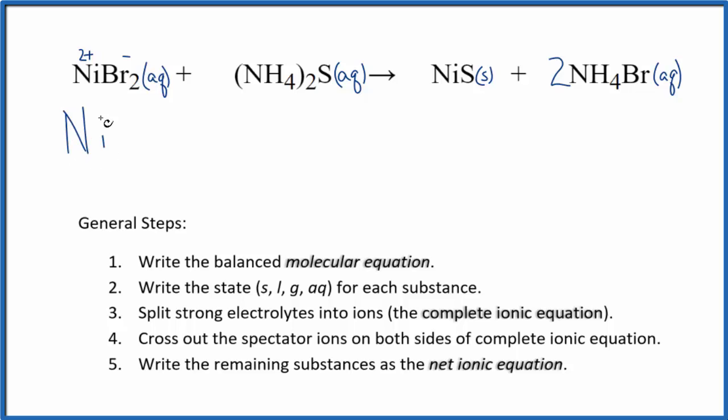So we'll have the nickel-2 ion, and then we'll have two of these bromide ions. So 2Br-. The ammonium ion here is always 1+. That's a good one to remember. And we have two of them. So two ammonium ions, that's the NH4+. And then the sulfide ion, that's 2-. So we just have one of those, S2-.